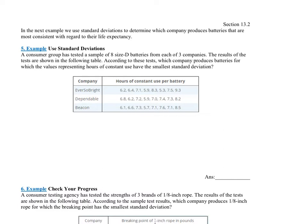So a small distribution means a small standard deviation. So if someone told you I have a standard deviation of 10 versus a standard deviation of 1, for this example, we're looking for the standard deviation of 1. We want it to be really small, really close. Okay, so let's look at this. It says, a consumer group has tested a sample of eight size-D batteries from each of three companies. The results of tests are in the following table. According to these tests, which company produces batteries for which the values representing the hours of constant use have the smallest standard deviation?